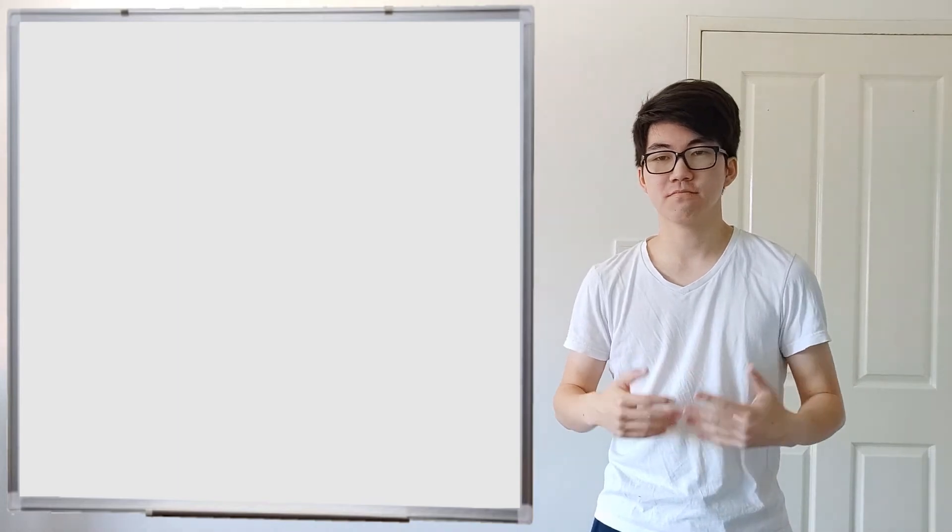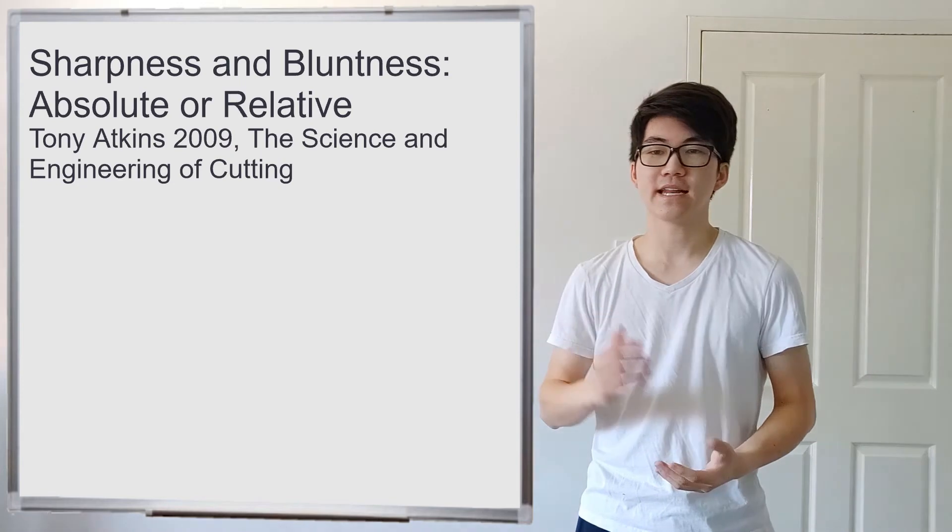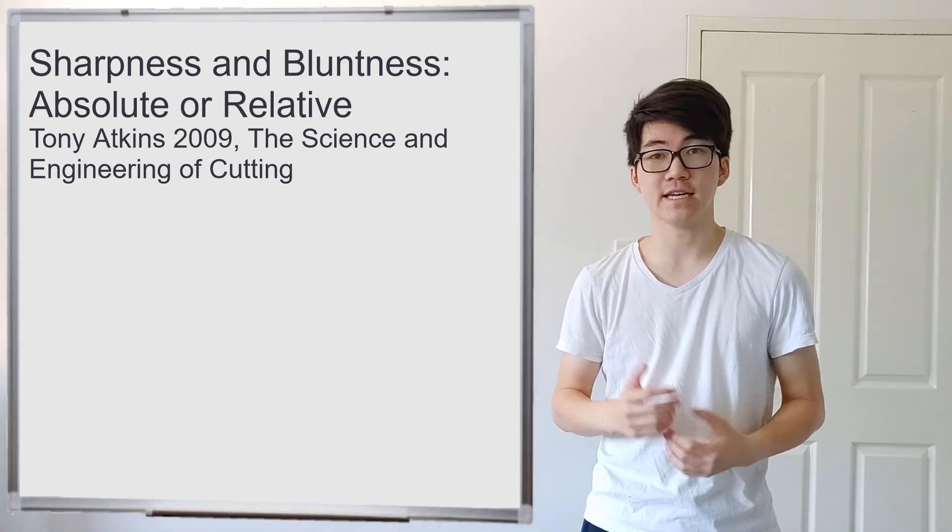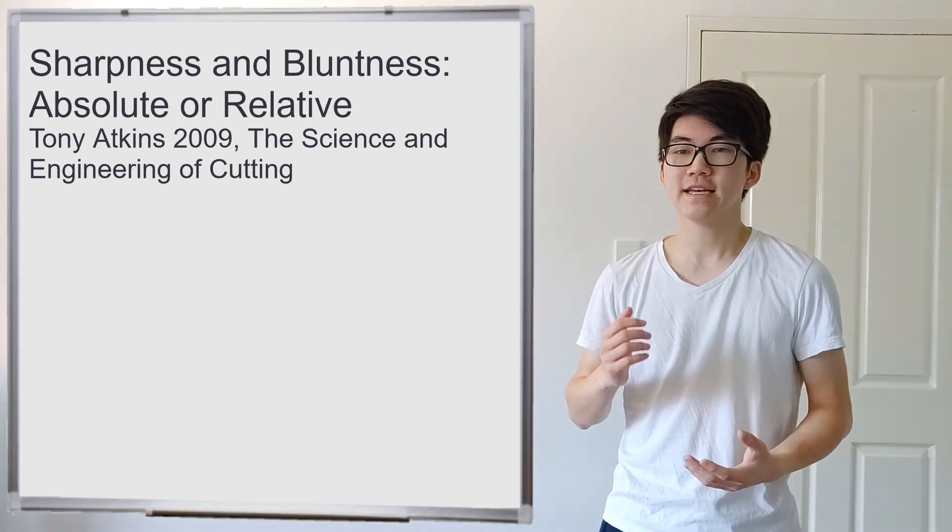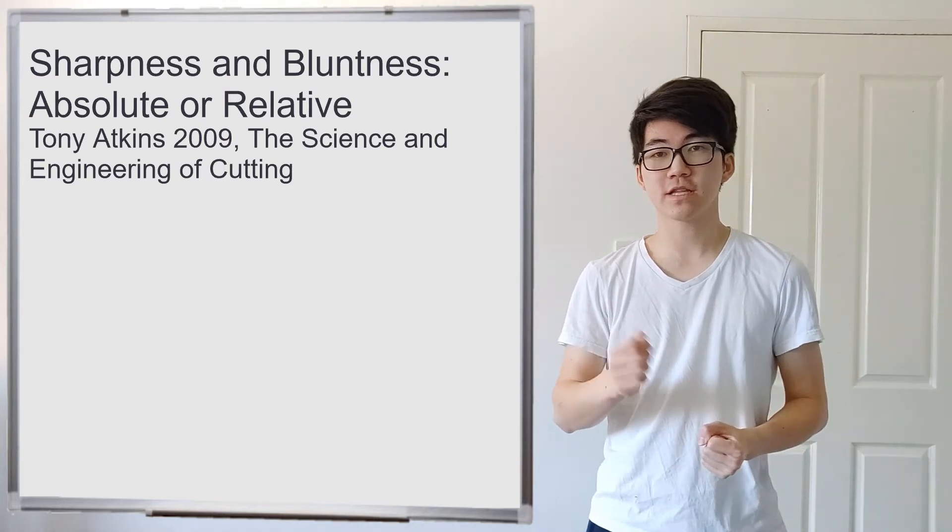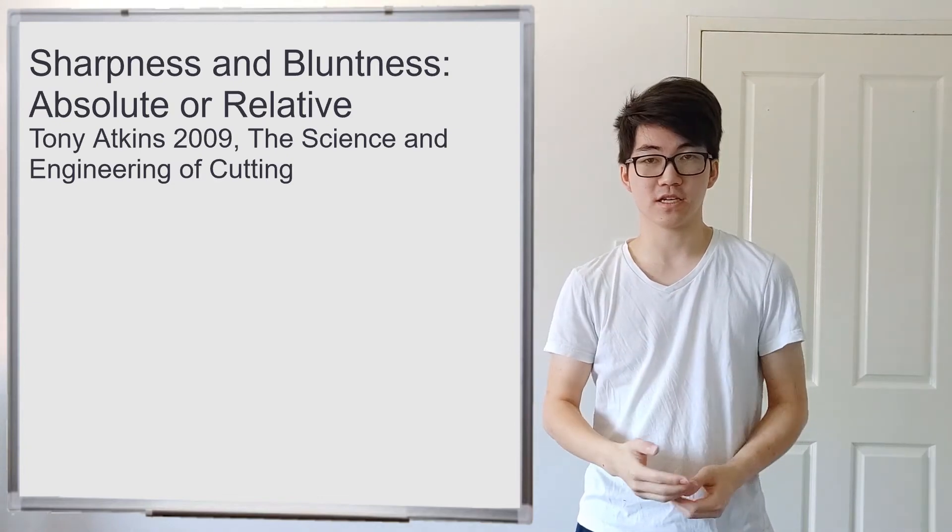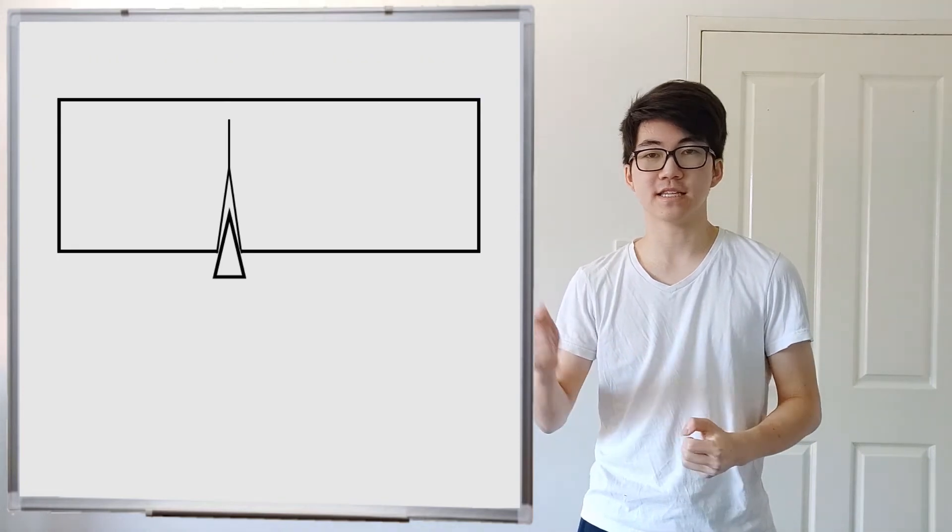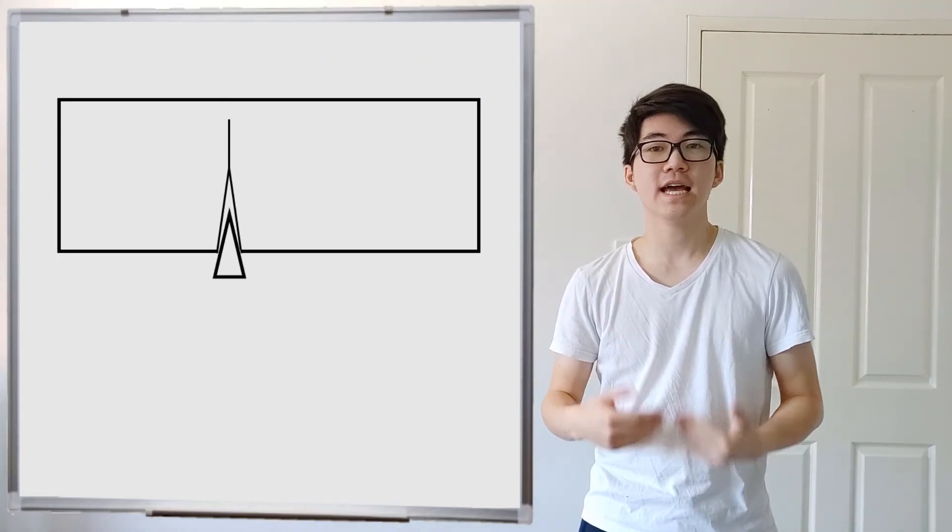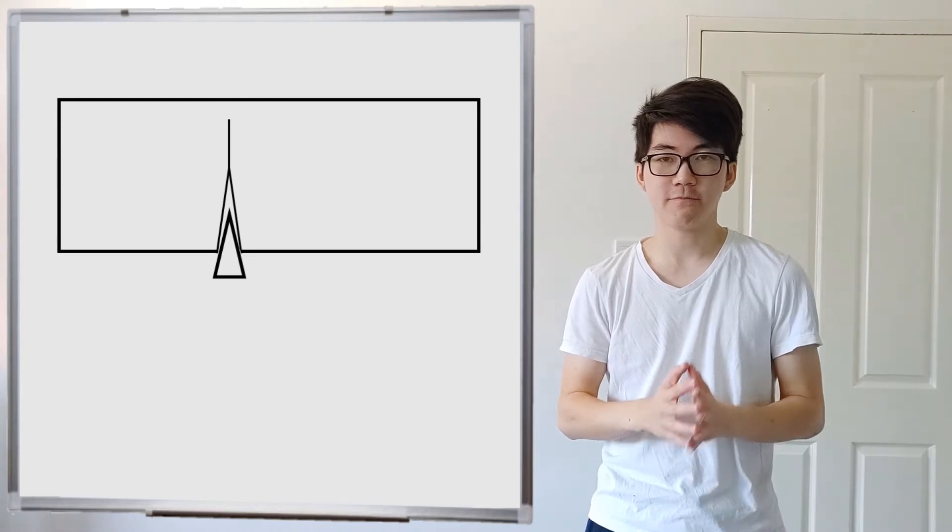So blade edge radius matters quite a lot. There's a really smart guy called Tony Atkins. And he wrote a paper in the 2009 edition of the Science and Engineering of Cutting. And he showed that when you cut with a knife, then most people like to think that the edge splits material as it goes along. But that's not actually what happens. What actually happens is that the knife goes in like a wedge, and it creates a crack ahead of the knife in the material.